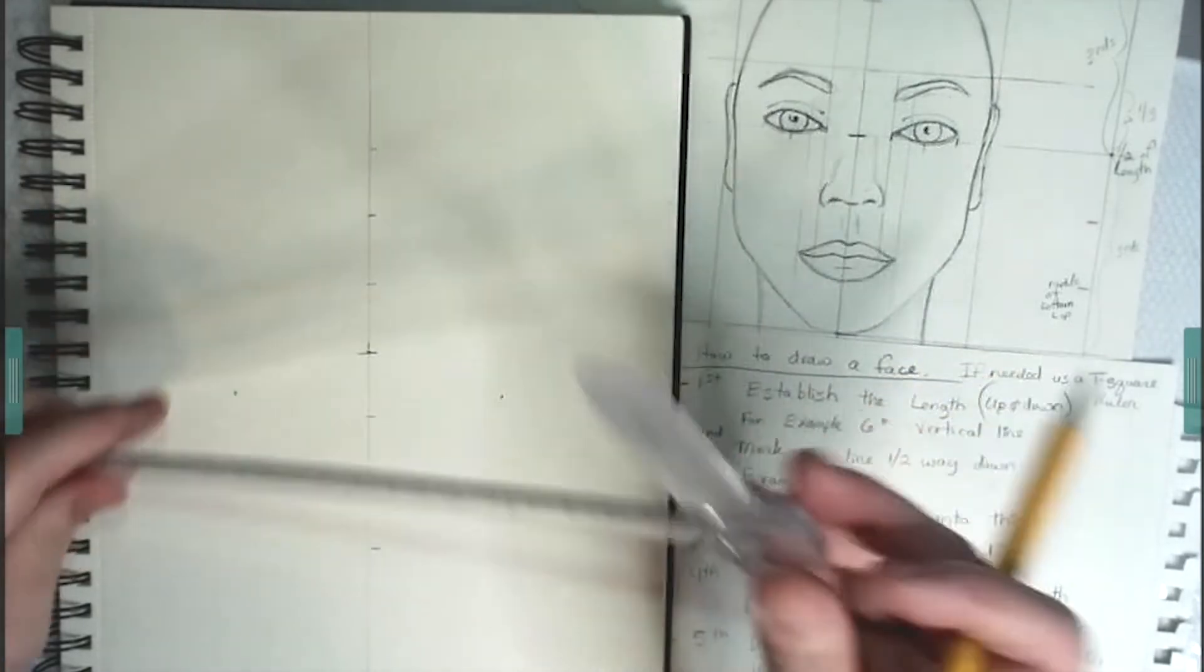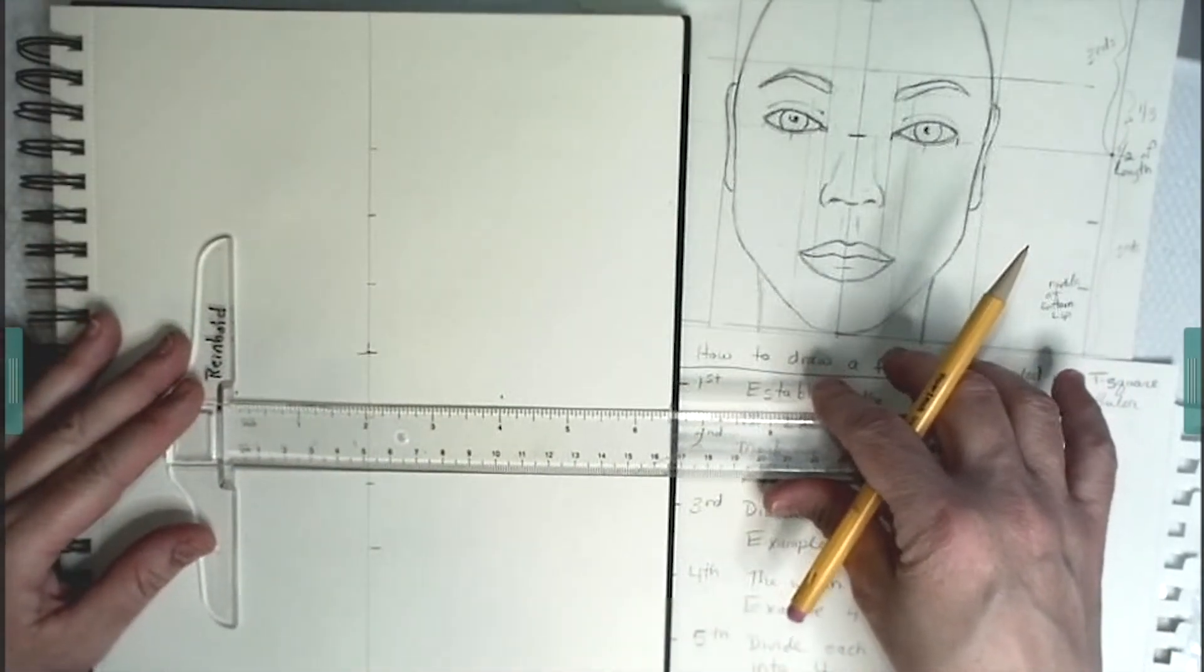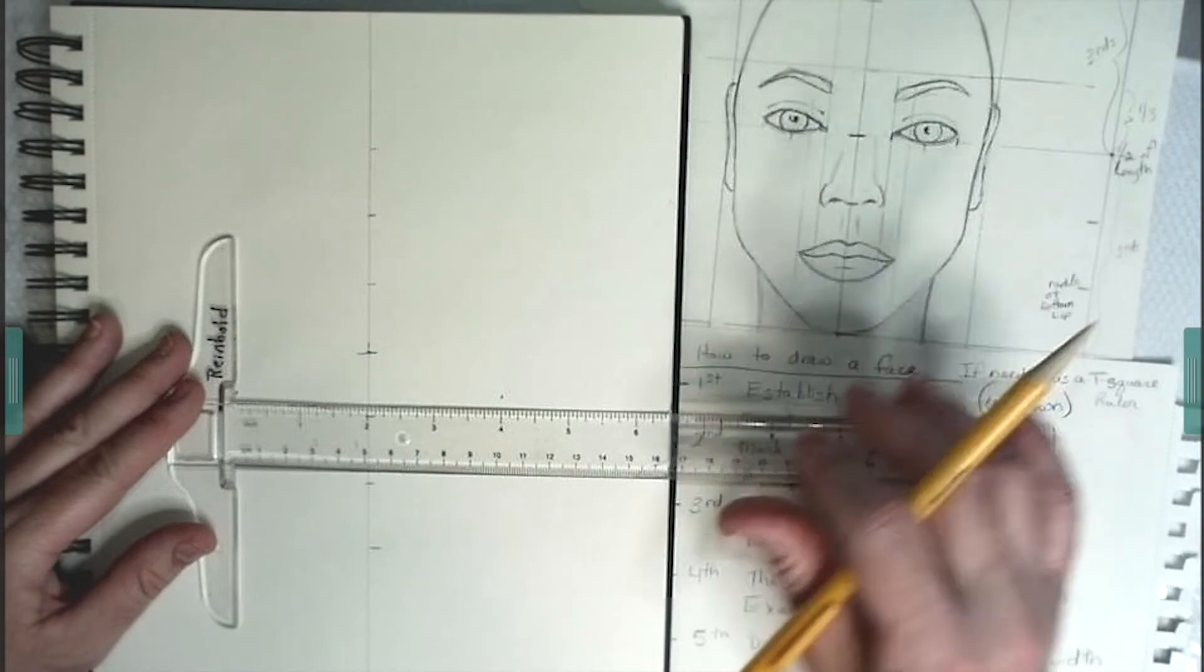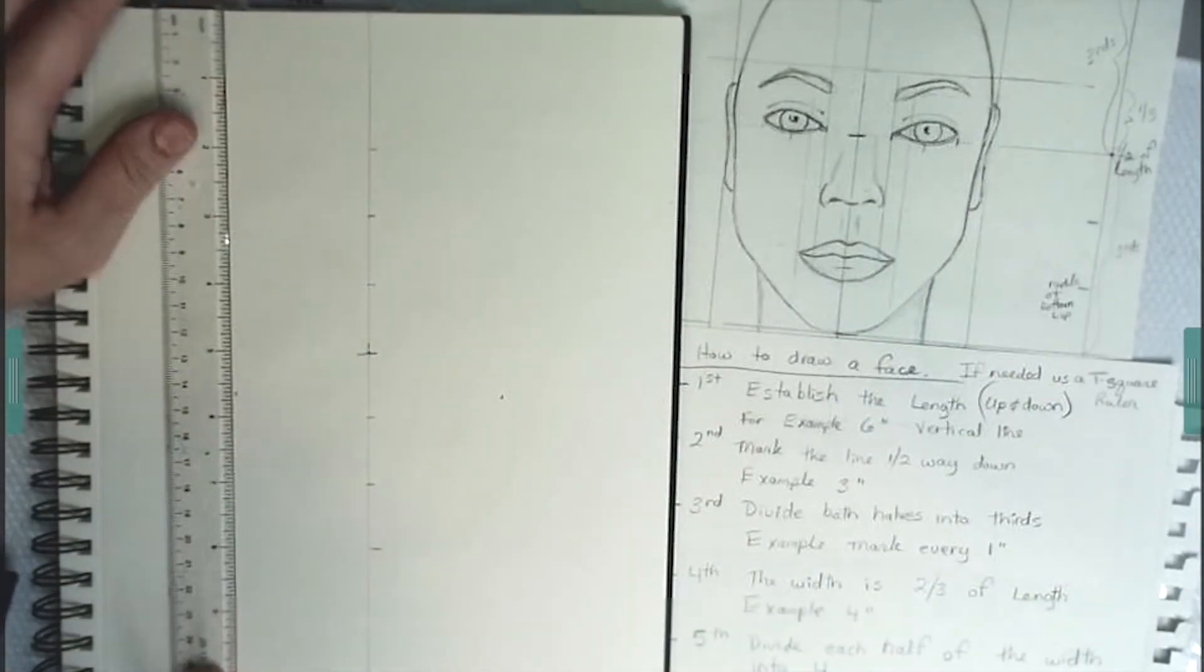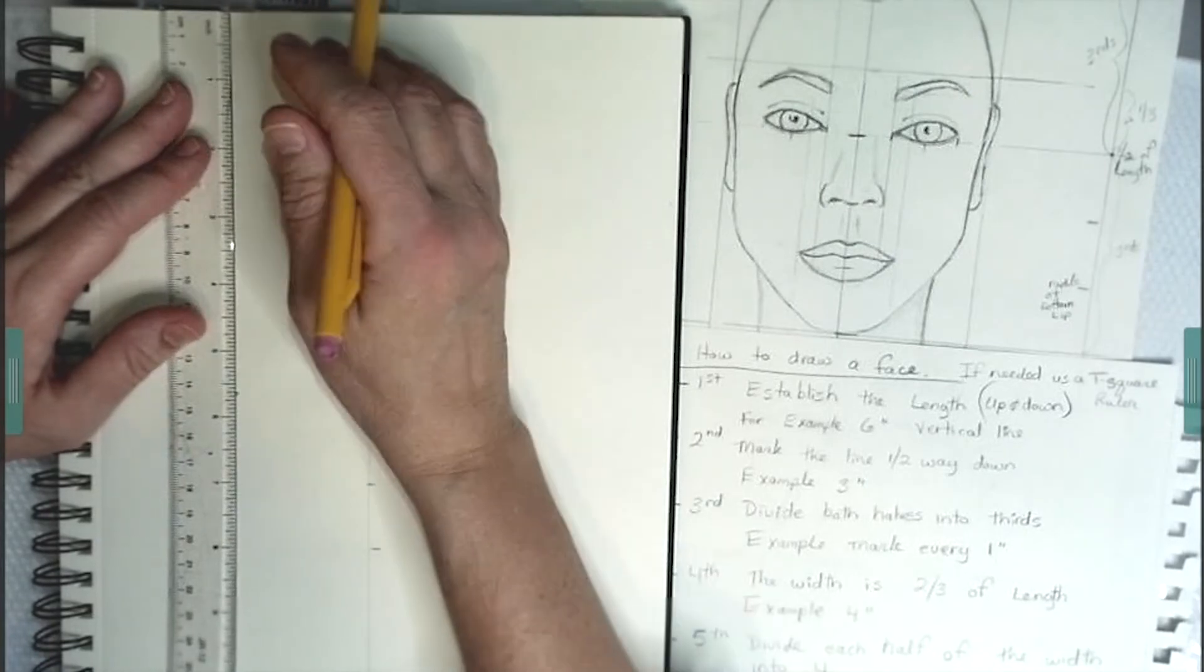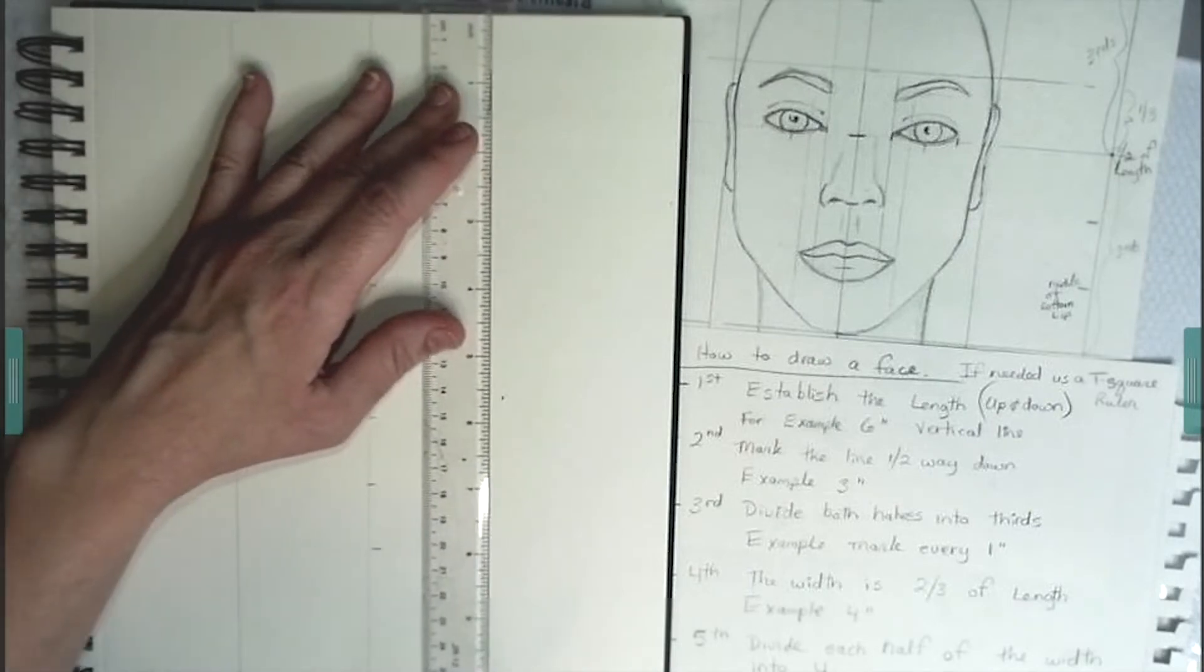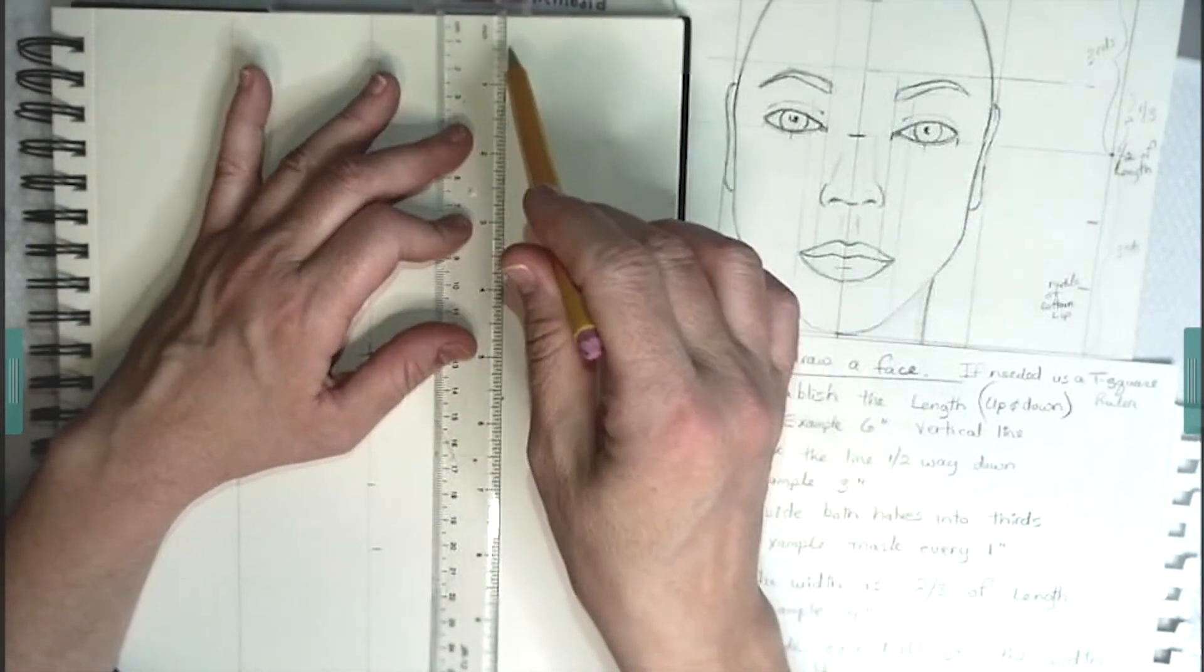It means from the middle mark, it's two inches on each side, which is four inches. You want to always double check your measurements. And then you'll create a box around the points that you made. Your face will be drawn inside that box.